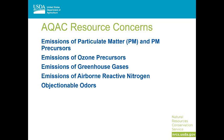For air quality and atmospheric change, we currently have five main broad categories of resource concerns. The particulate matter one is related to dust and smoke, as well as gases like ammonia that can react in the atmosphere to form fine particles. Ozone precursors include oxides of nitrogen and volatile organic compounds that can contribute to smog formation. The primary greenhouse gases of concern from agriculture are methane, nitrous oxide, and carbon dioxide, and we are also interested in carbon sequestration in that resource concern. Our airborne reactive nitrogen resource concern is focused on ammonia and oxides of nitrogen and their impacts on atmospheric chemistry, as well as their impacts when they deposit into sensitive ecosystems. We also look at odors and the nuisance impacts they can cause.